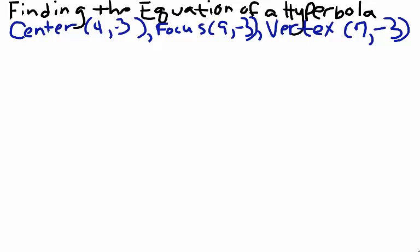Since the center of the hyperbola occurs at (h, k), h is equal to 4, and k is equal to negative 3.